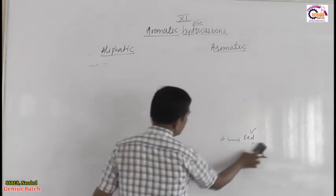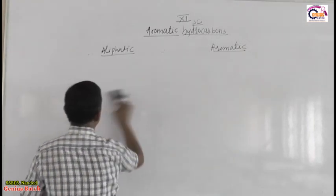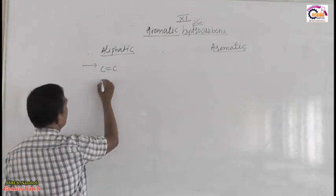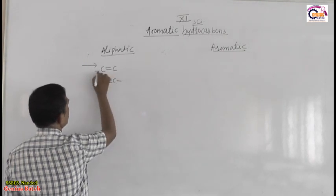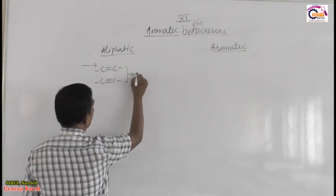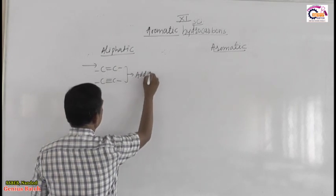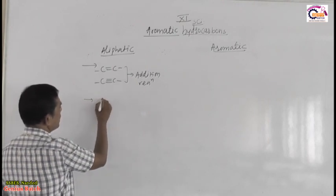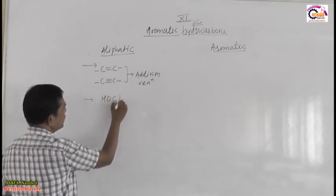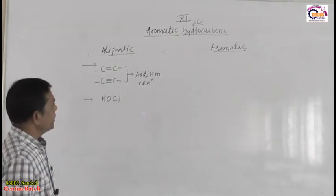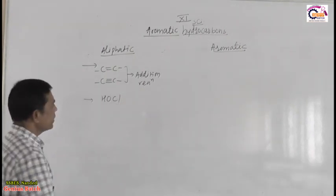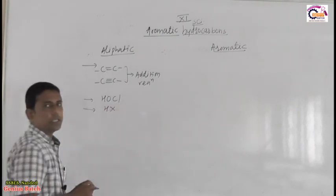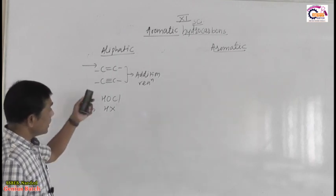The next distinguishing point: alkenes and alkynes easily undergo addition reactions. For example, addition with HOCl (hypochlorous acid) and HX (HCl, HBr, HI) according to Markovnikov's rule. If benzene contained carbon-carbon double bonds like an open-chain compound, it should also undergo addition reactions. But HOCl and HX cannot react with benzene — it never undergoes addition reactions with these reagents.